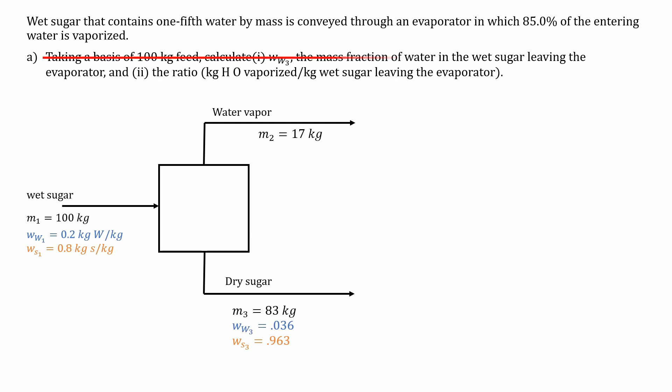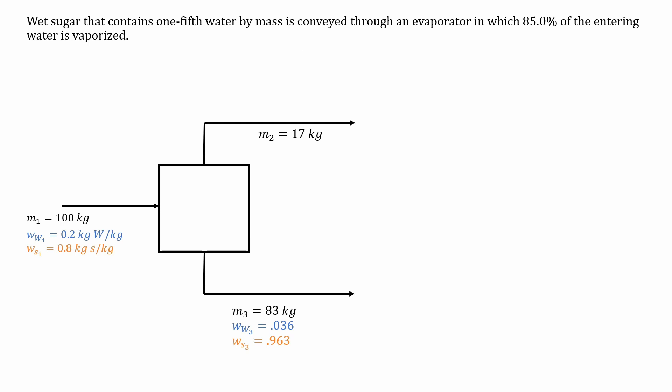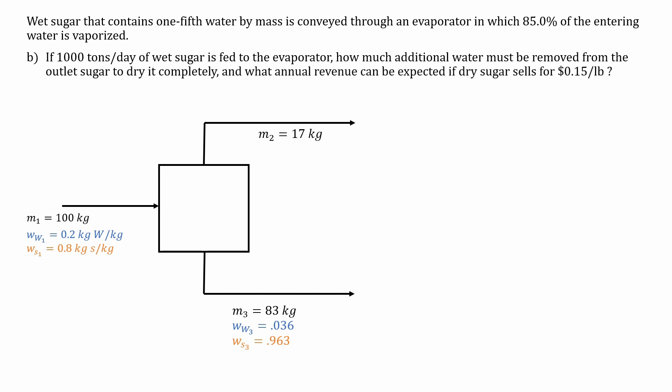We can go ahead and cross this entire thing out, which means we're on part B. If a thousand tons per day of wet sugar is fed to the evaporator, how much additional water must be removed from the outlet sugar to dry completely? And what annual revenue can be expected if dry sugar sells for 15 cents a pound. Again, try it by yourself before continuing.